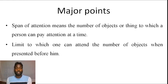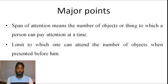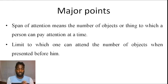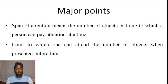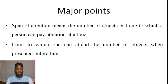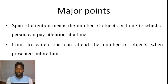For instance, political science and education subject are both available, but can I pay attention to both subjects at the same time? Is it possible for me to pay equal attention to both? That limit — how many objects a person can attend to — is known as span of attention.